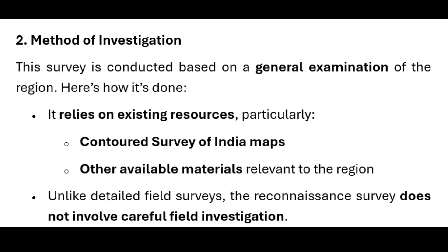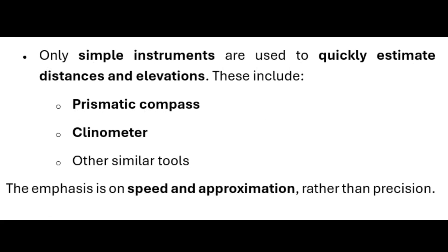Here's how it's done. It relies on existing resources, particularly Contoured Survey of India Maps and other available materials relevant to the region. Unlike detailed field surveys, the reconnaissance survey does not involve careful field investigation. Only simple instruments are used to quickly estimate distances and elevations. These include a prismatic compass, clinometer, and other similar tools. The emphasis is on speed and approximation rather than precision.